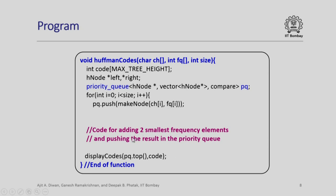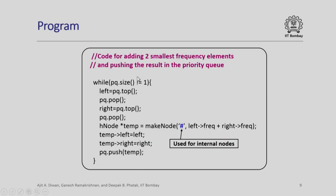Next, we will need to write code for adding two smallest frequency elements and pushing the result back into the priority queue. Let us look at that code now. First code for adding two smallest frequency elements and pushing it back.